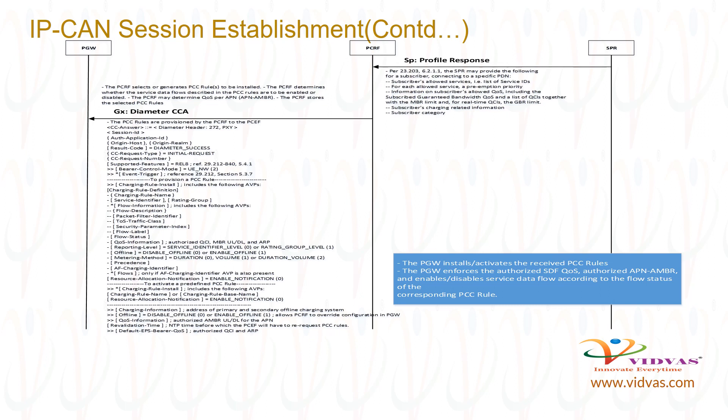After receiving the profile response from SPR, the PCRF selects or generates PCC rules to be installed. The PCRF determines whether the service data flows described in the PCC rules are to be enabled or disabled. The PCRF may determine QoS per APN. The PCRF stores the selected PCC rules.